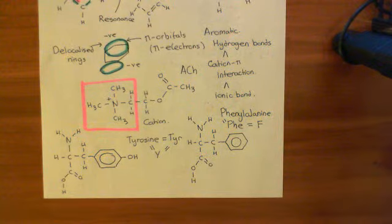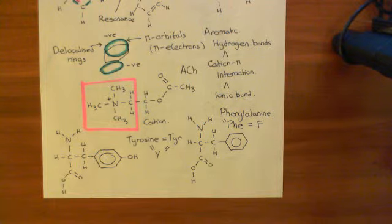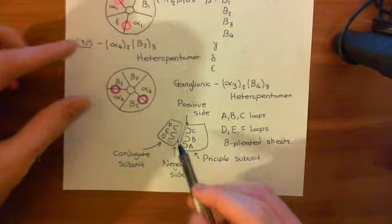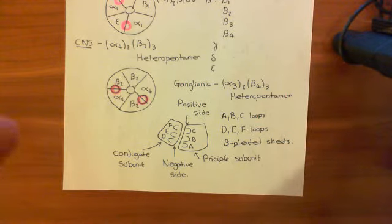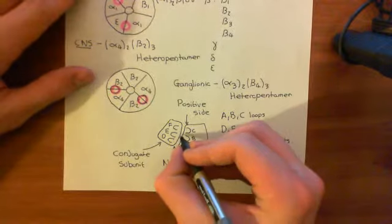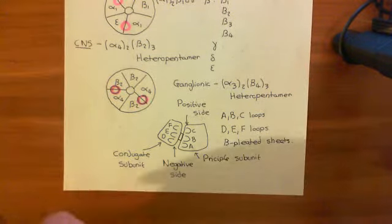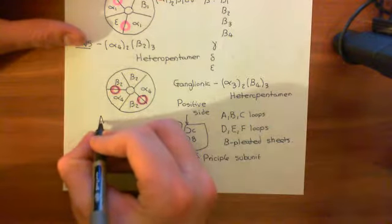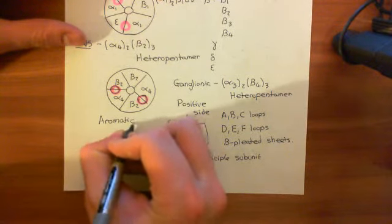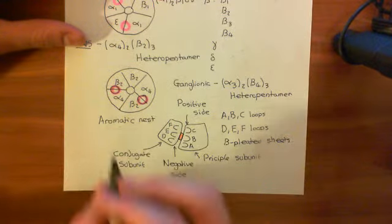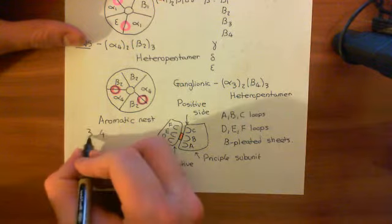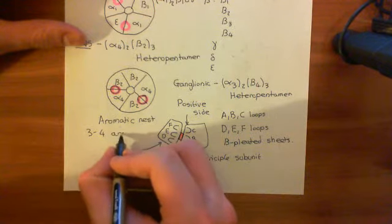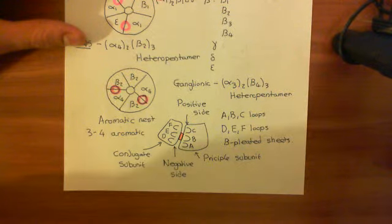Here are our three aromatic amino acids which are going to be found in this cavity between the two protein subunits of the nicotinic acetylcholine receptor. Within this cavity you have lots of tryptophanes, lots of tyrosines, and lots of phenylalanines. Specifically, there is a particular portion of this cavity known as the aromatic nest, which is where the acetylcholine is going to bind. This aromatic nest has three to four aromatic residues surrounding it — usually tyrosines, phenylalanines, and tryptophanes.